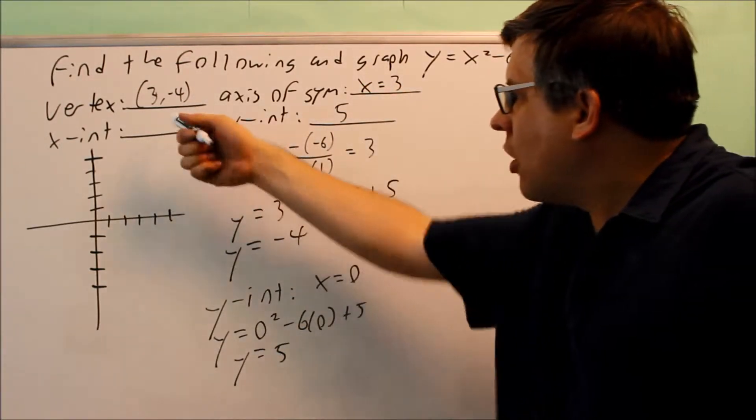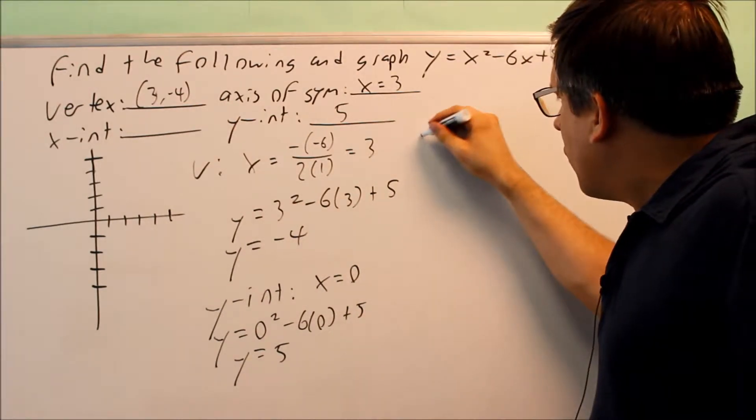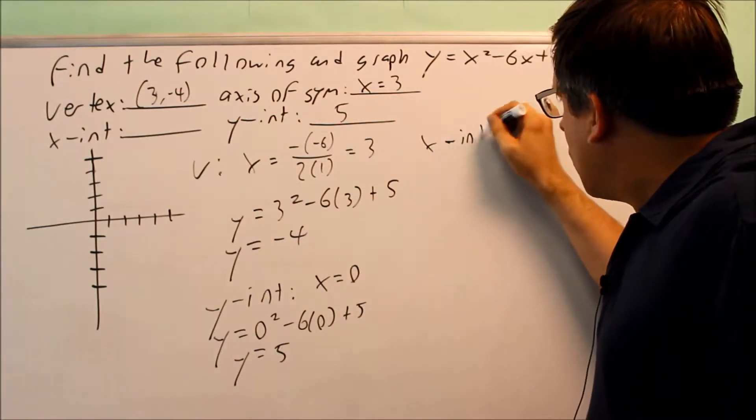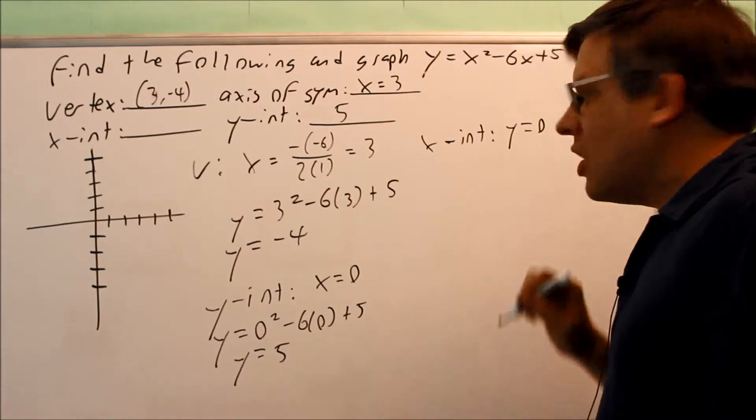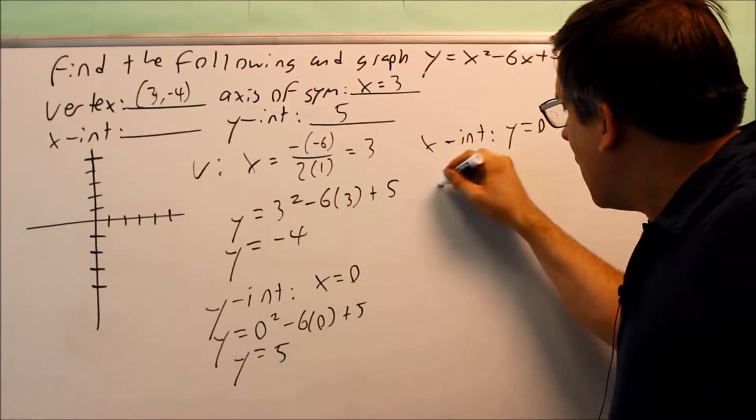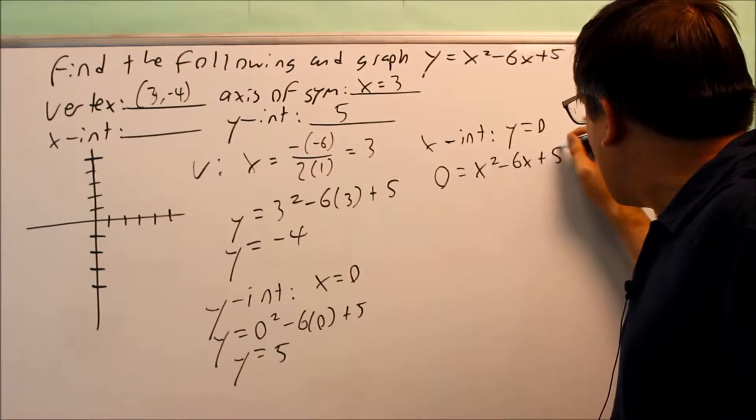The last thing I want to find are the x-intercepts. So for x-intercept, you want to do the same thing - you're putting in a 0 for x. So I have 0 equals x squared minus 6x plus 5.